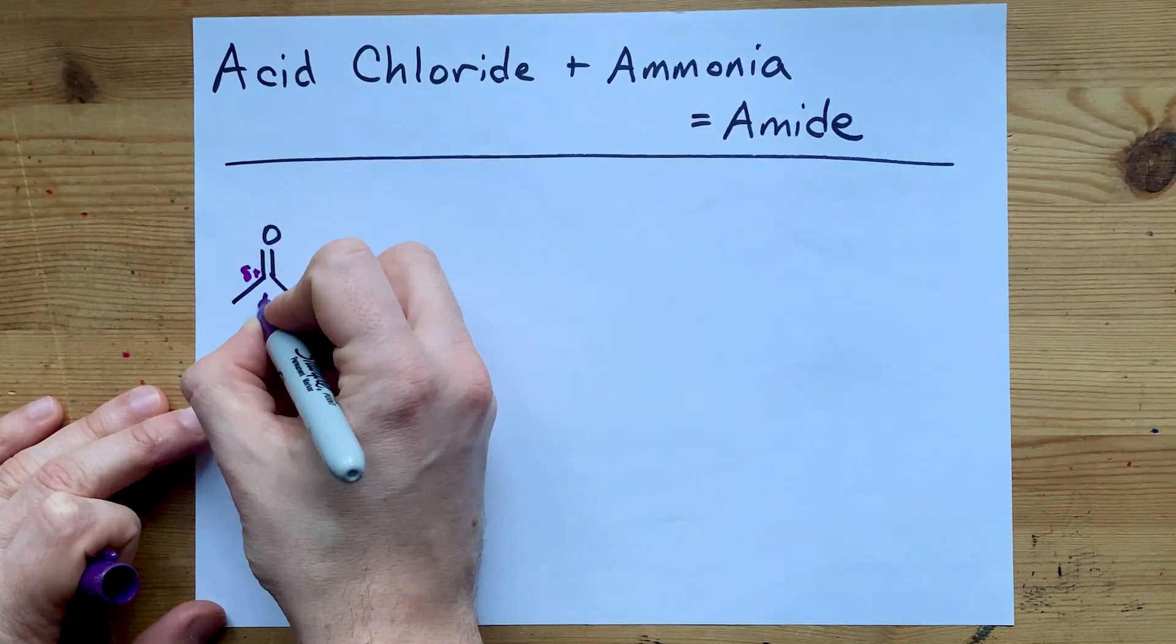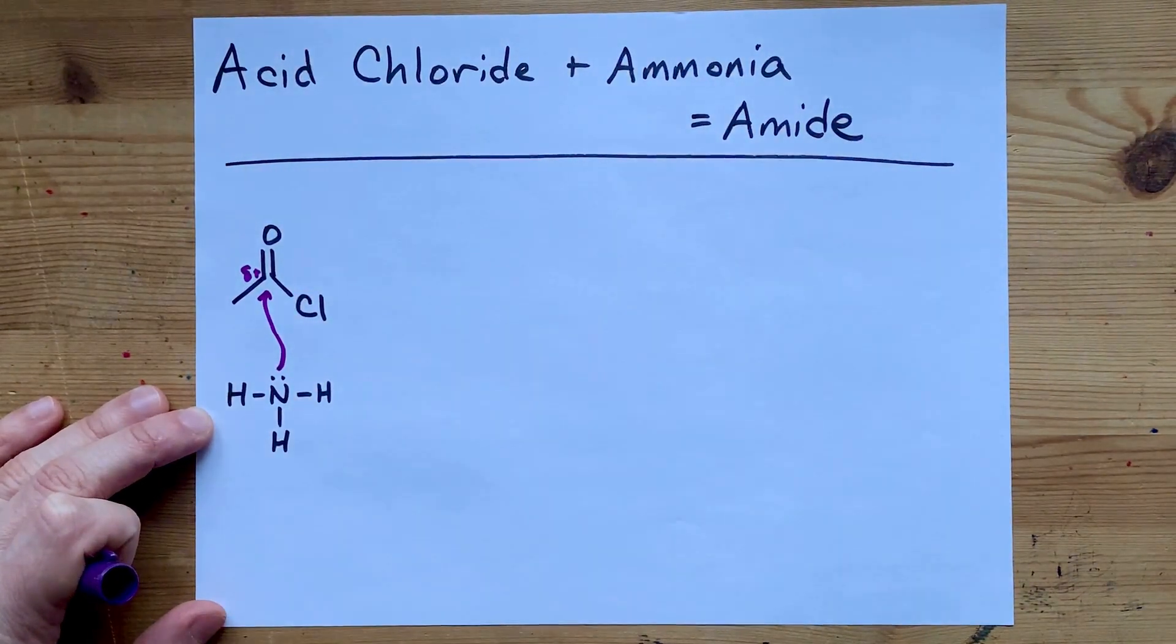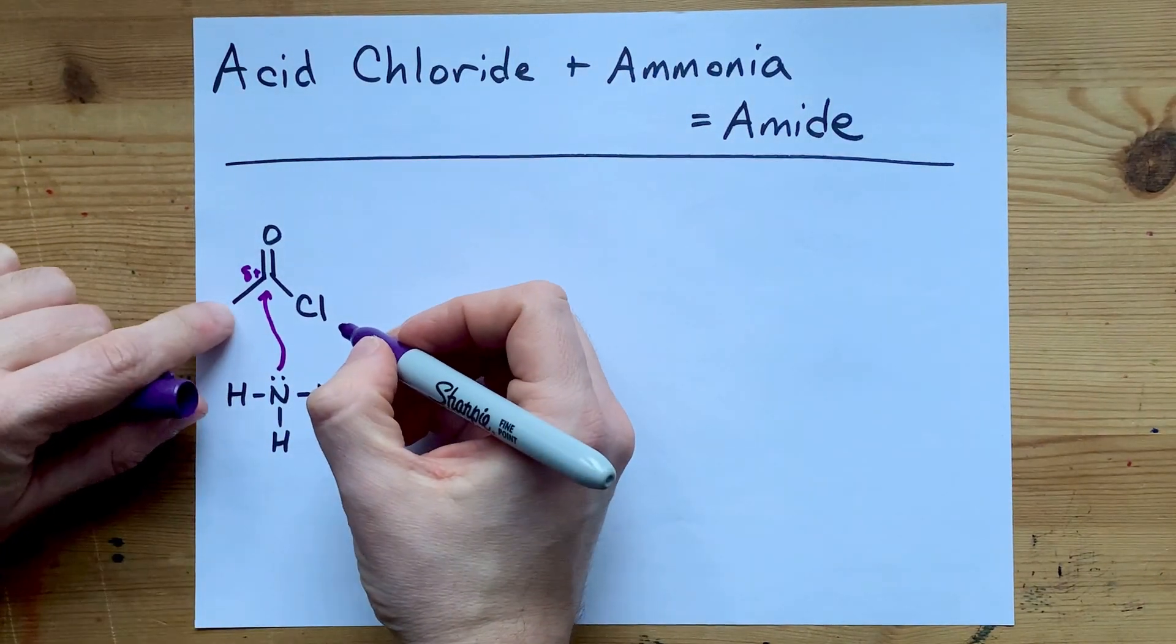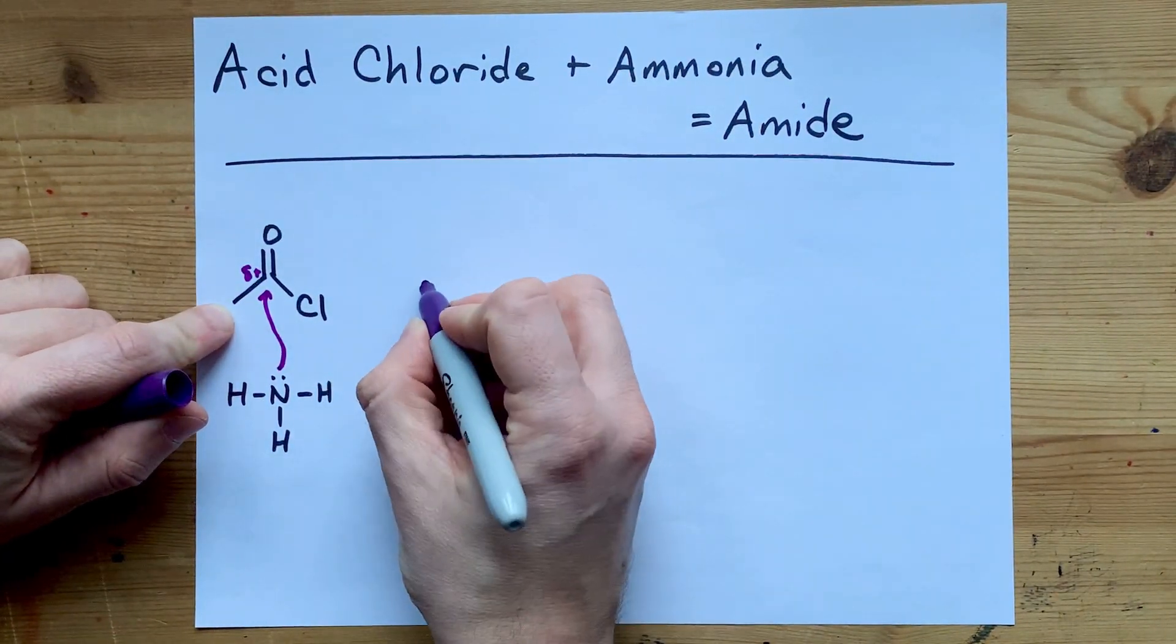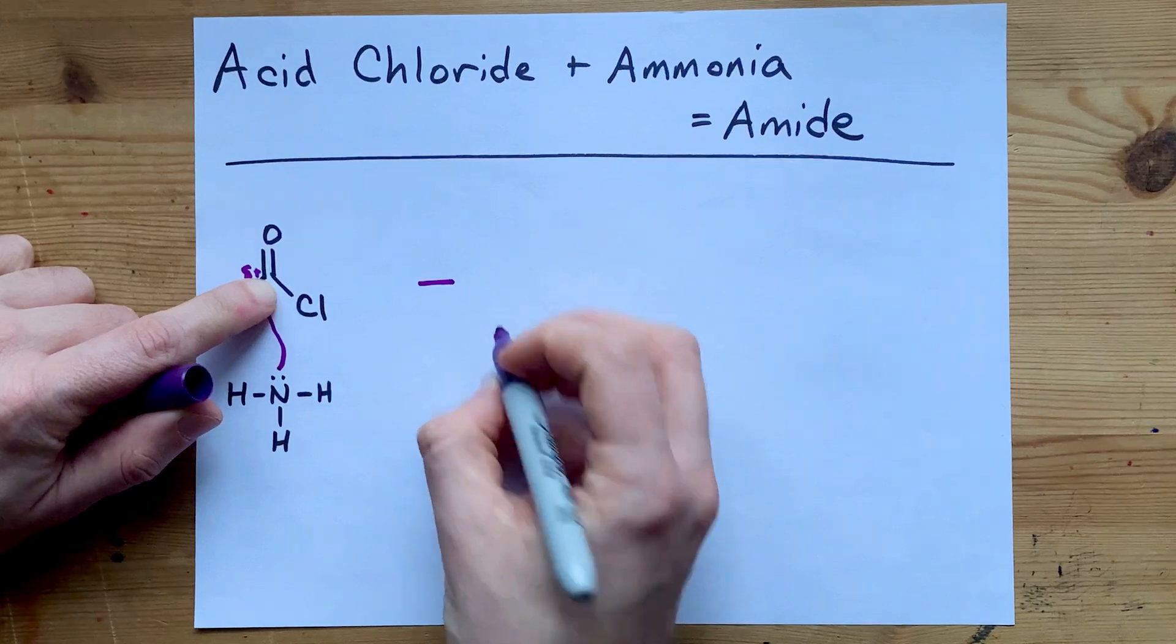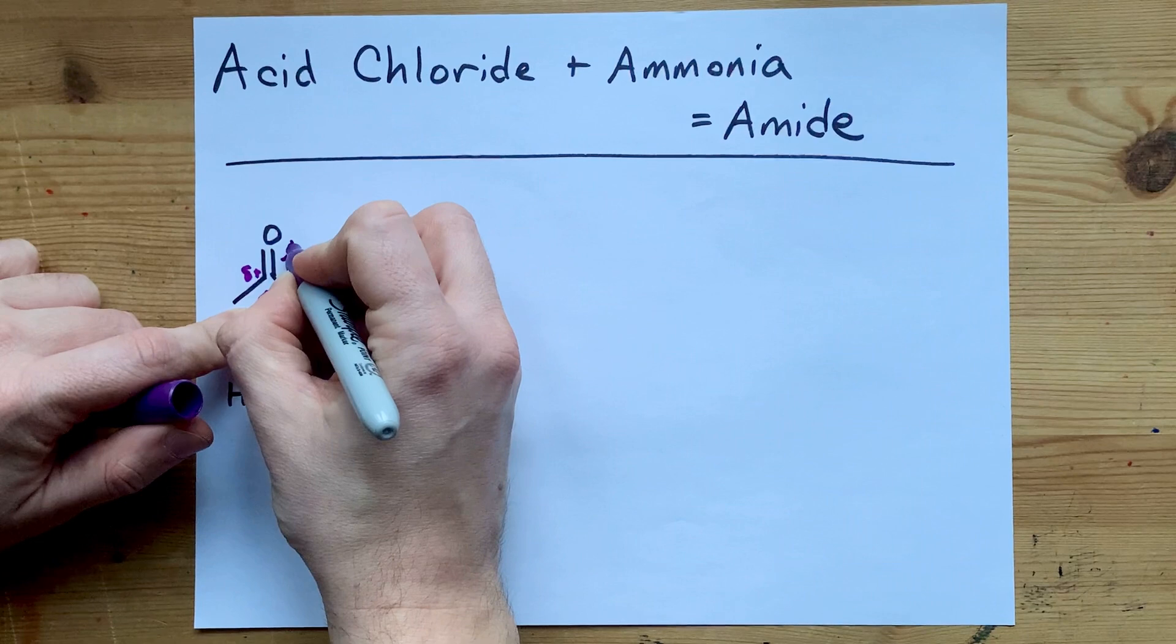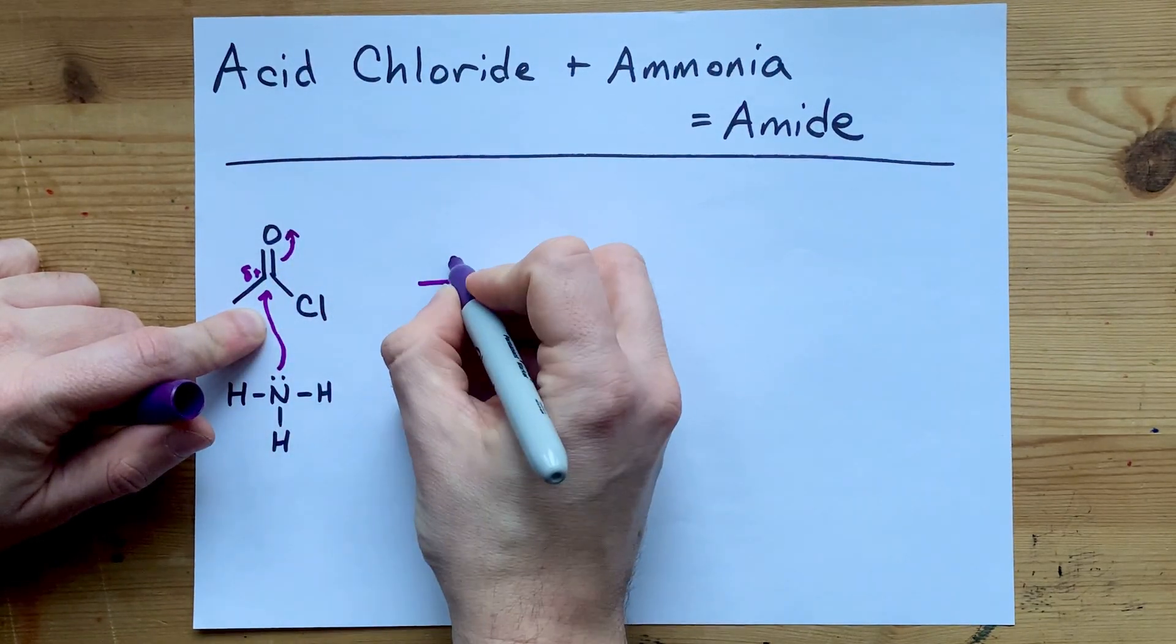That's ripe for attack by the lone pair of an ammonia molecule. When that happens, this carbon chain, however large, is still attached to that carbon. In order to accommodate this new bond, the double bond between the oxygen breaks.